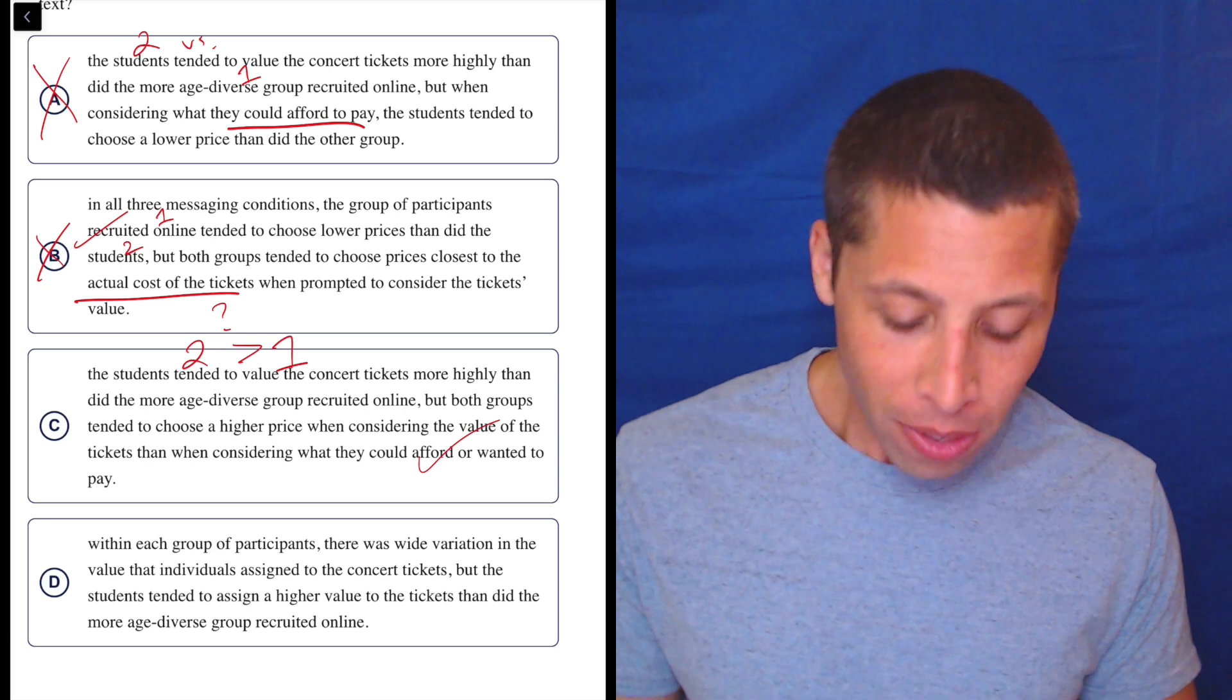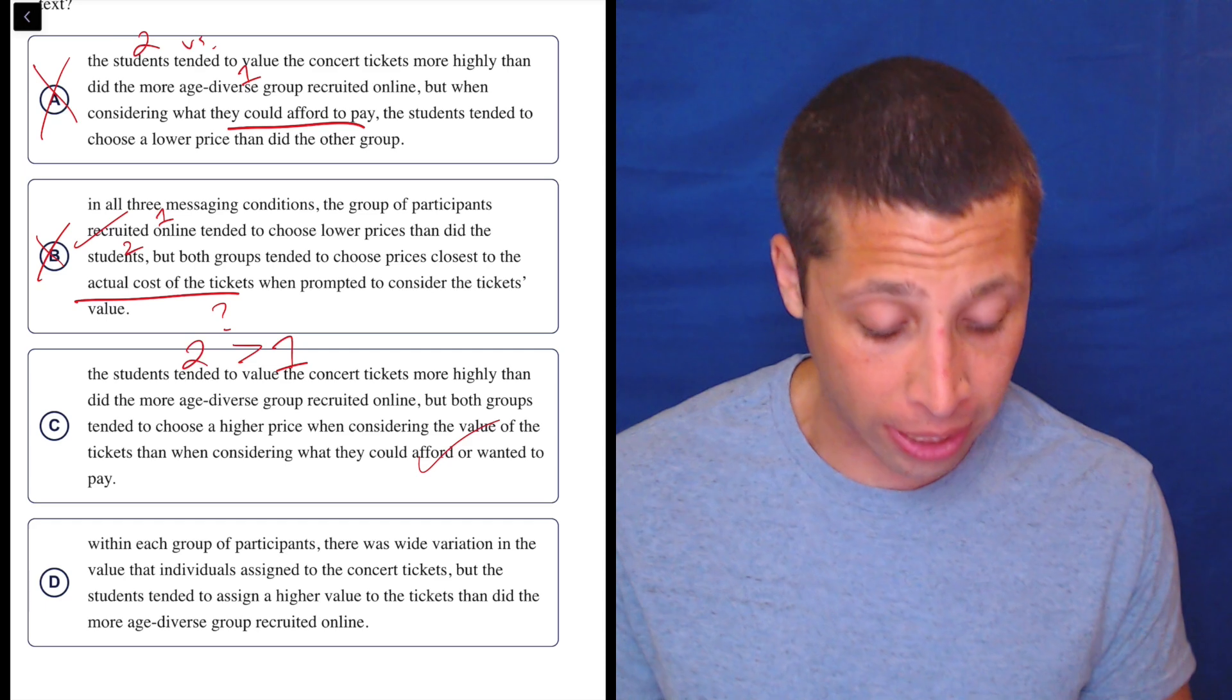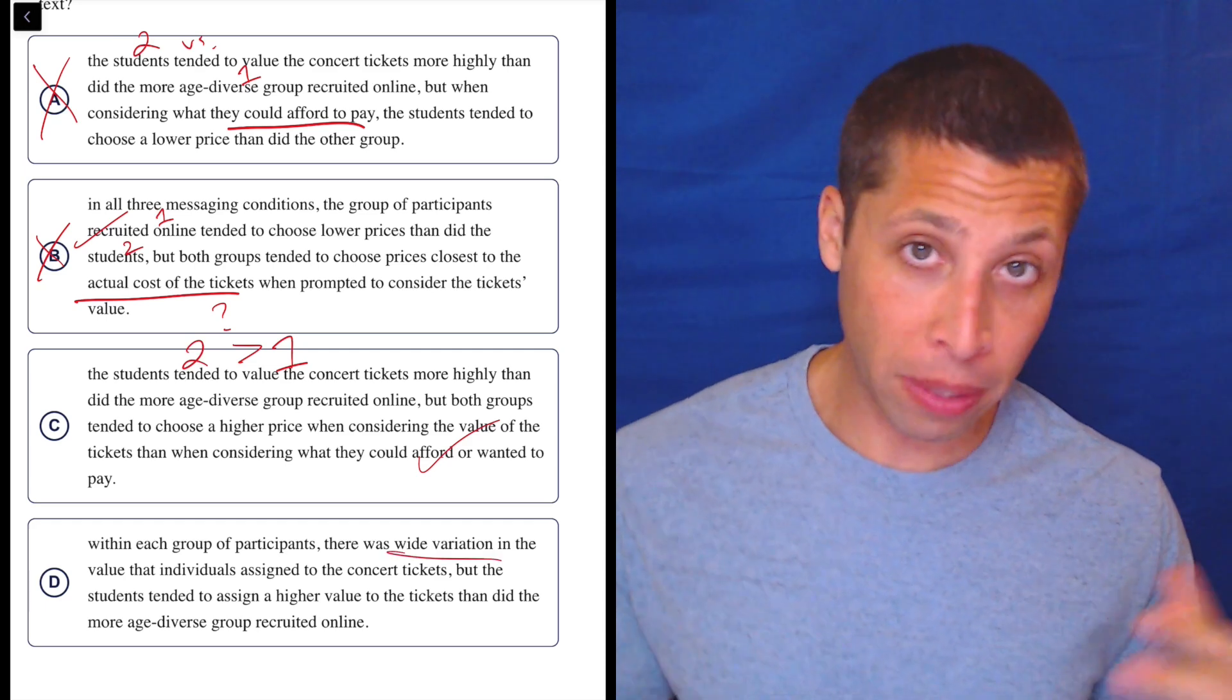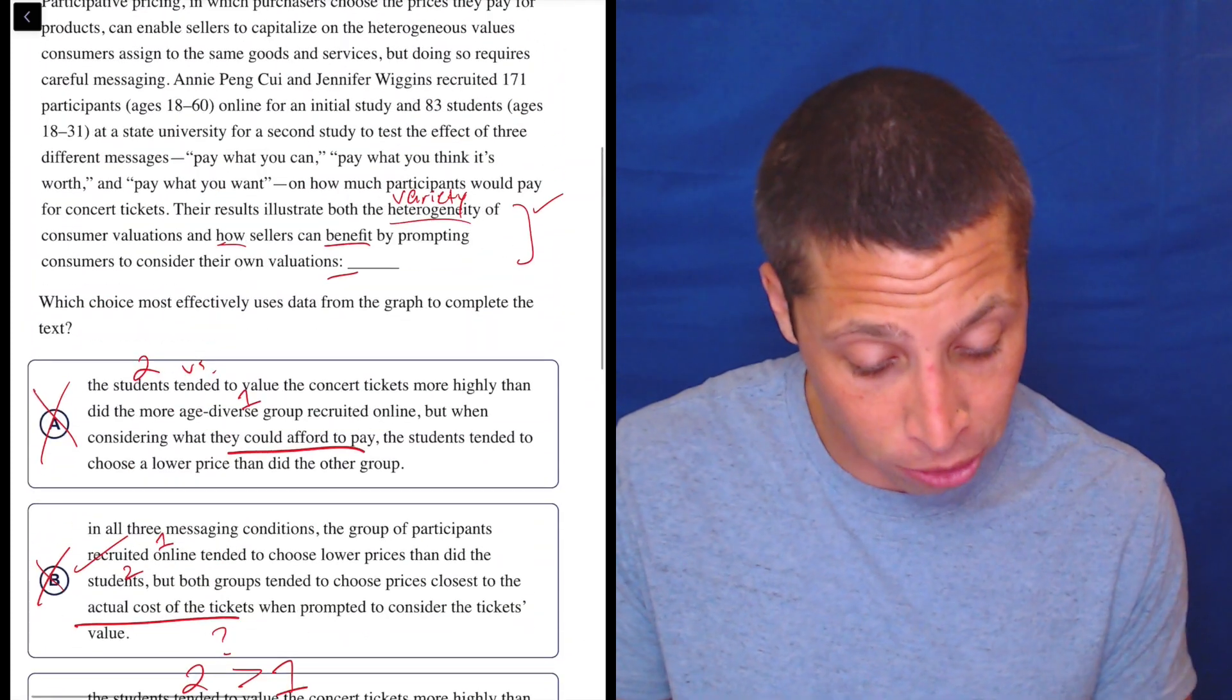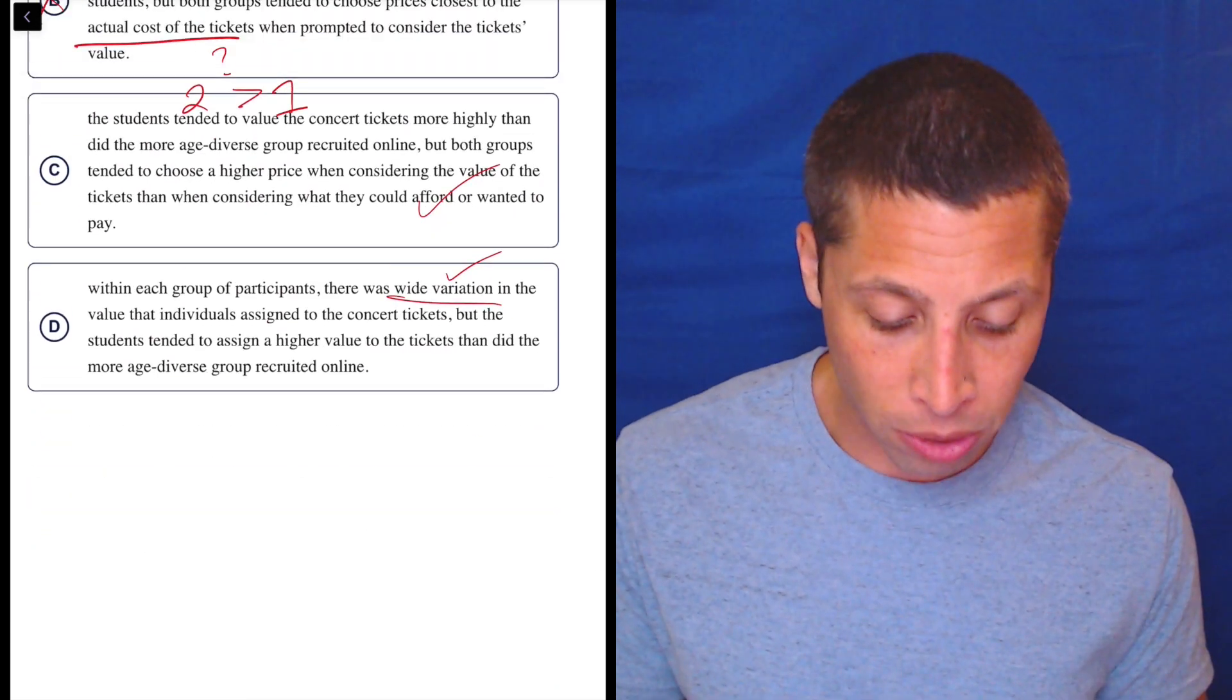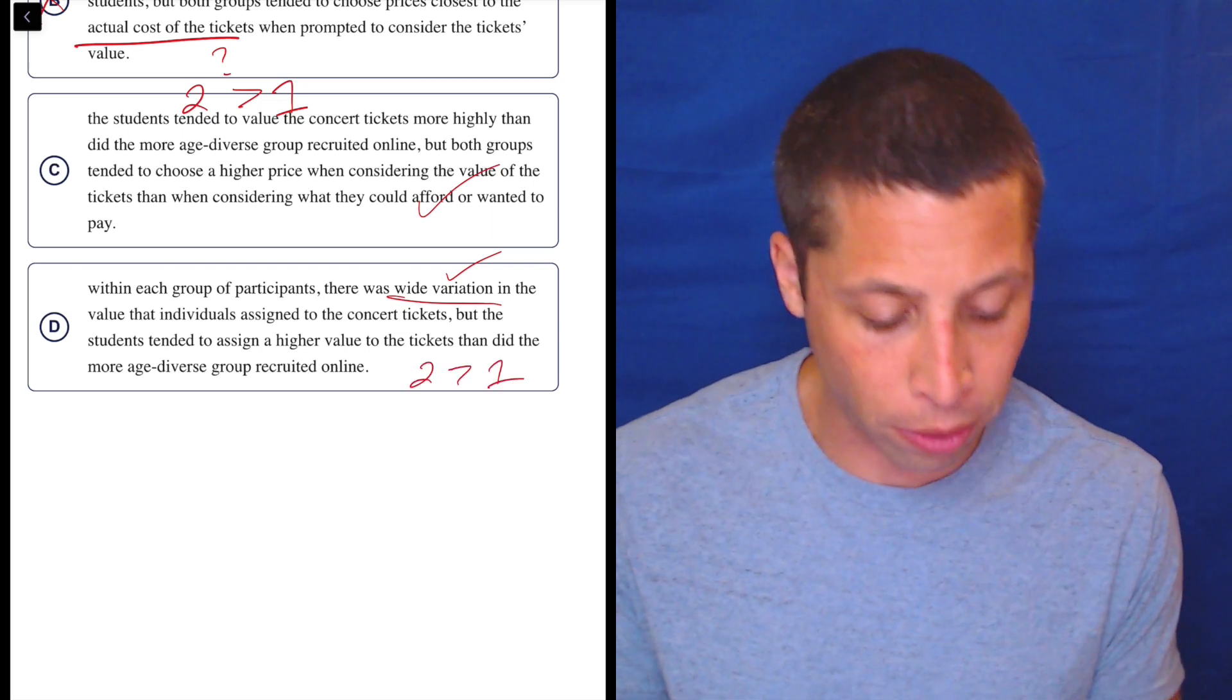Let's look at D. Within each group of participants, there was wide variation in the value that individuals assigned to the concert tickets. I'd say that's probably true. Now, wide variation, that's a bit of a subjective thing, but I'd say the difference between $30 and $50 is pretty wide. So, okay, check. And that also matches with that idea of variety here that we talked about. But the students tended to assign a higher value to the tickets than did the more age-diverse group recruited online. Again, that also seems true. Two is greater than one.